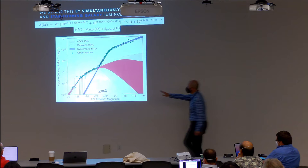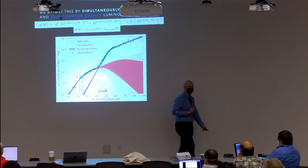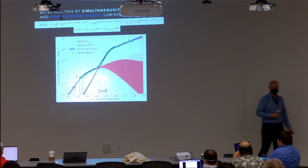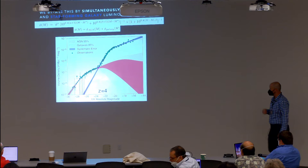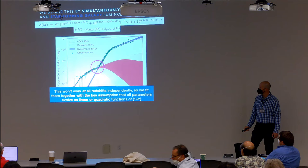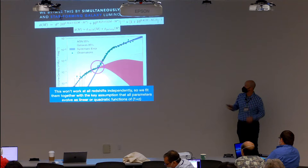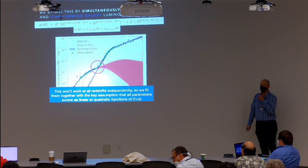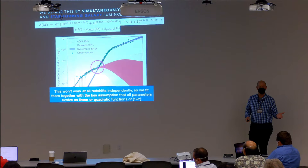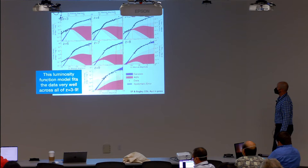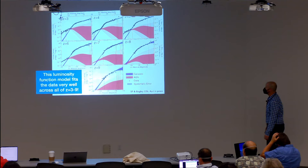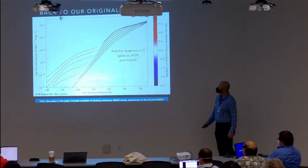At redshift 4 we have lots of bright AGN data; at redshift 5 and 6 somewhat less; beyond that we don't yet have the AGN number density observations — that will come with Euclid and the Nancy Grace Roman Space Telescope. So we fit all redshifts simultaneously, with the key assumption that all luminosity function parameters evolve smoothly with (1+z). The fits look very good across all redshifts, including at redshift 9.